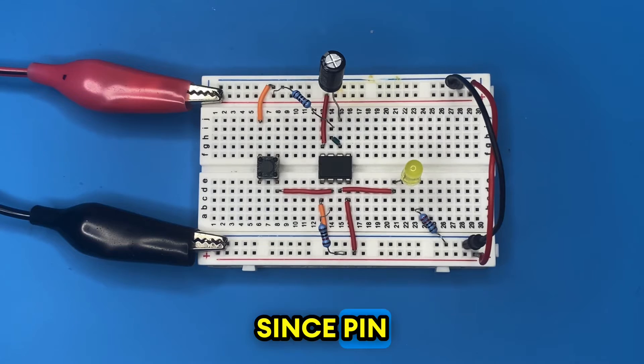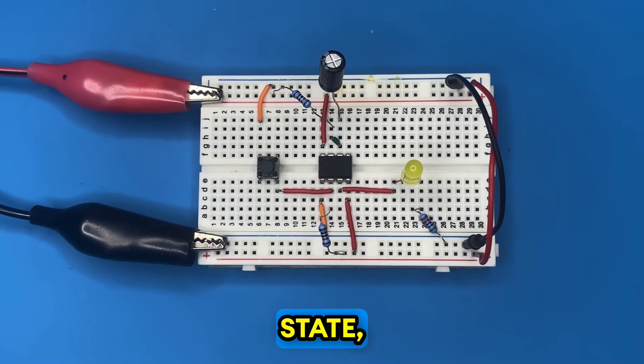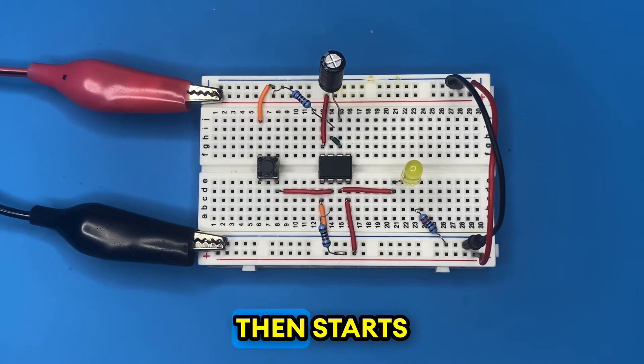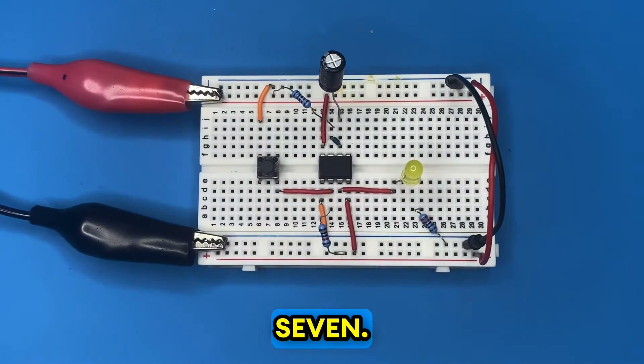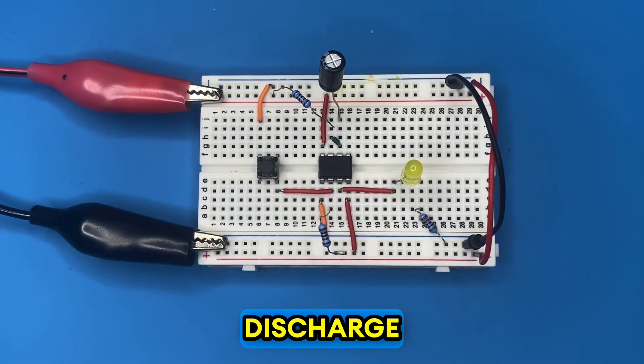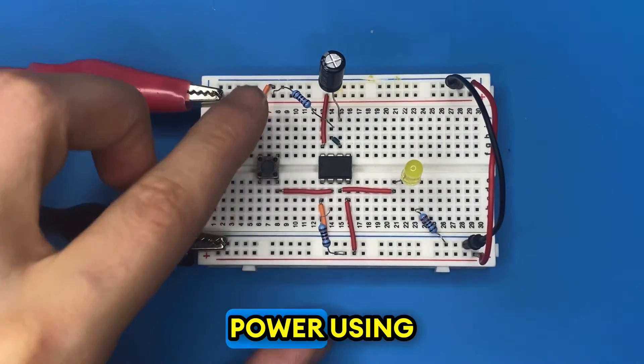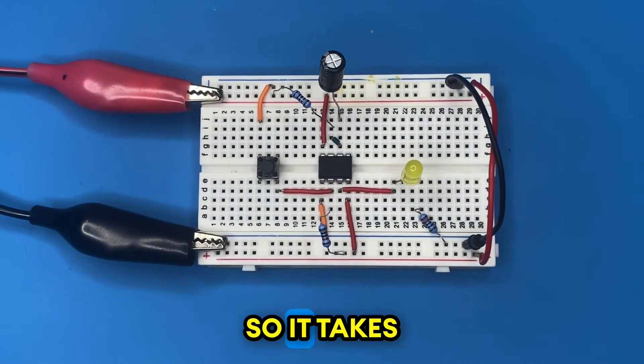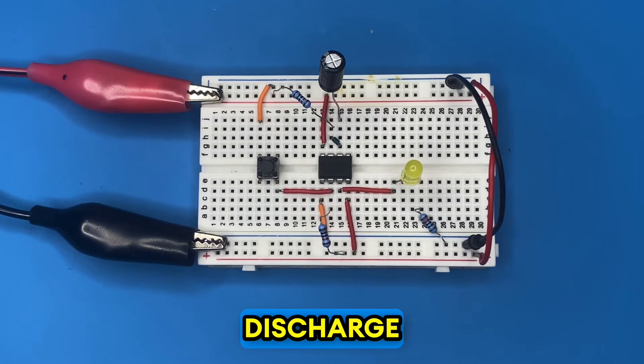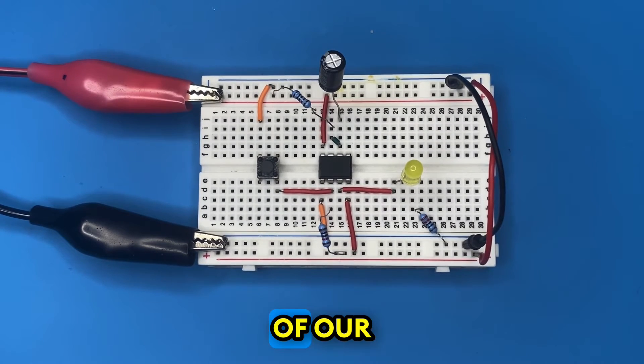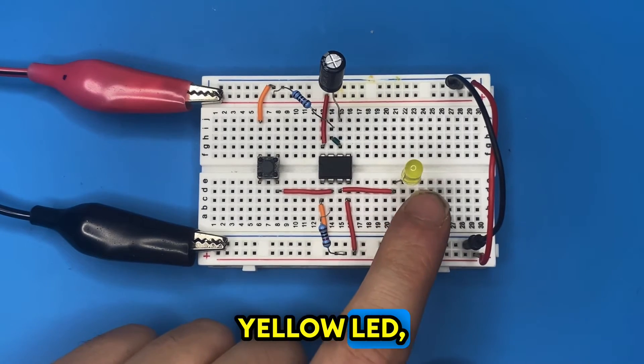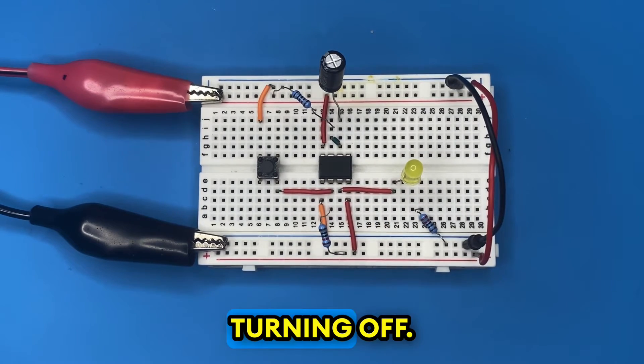Since pin 3 is also in low state, the capacitor then starts discharging through the discharge pin, pin 7. But the discharge pin is connected to power using our resistor, so it takes longer to discharge compared to charging. This determines the duration of our yellow LED which it stays on before turning off.